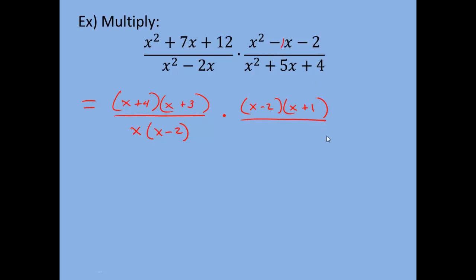We're dividing by x squared plus 5x plus 4. There is no GCF, I have three terms and no number in front of my x squared, so again two sets of parentheses with x in front of each. Numbers that multiply to 4 and add to 5 are positive 4 and positive 1, because 4 times 1 gives 4 and 4 plus 1 gives positive 5. So this factors as (x+4)(x+1).